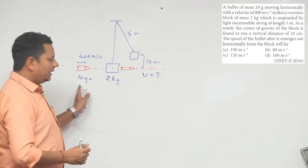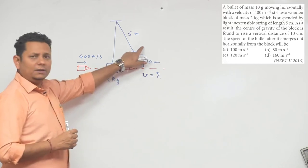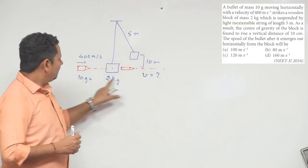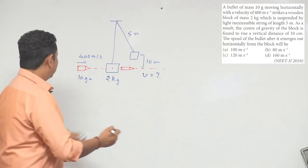The energy the bullet initially had was partly imparted to the block, causing its potential energy to rise, and the block also has some kinetic energy. So in this case, potential energy initial plus kinetic energy initial equals potential energy final plus kinetic energy